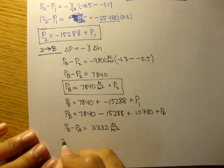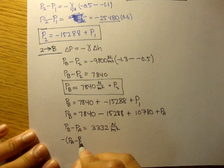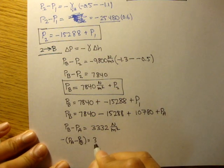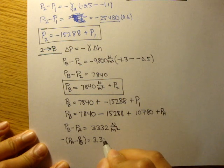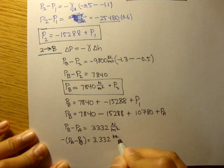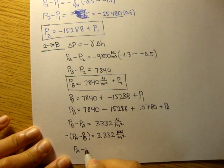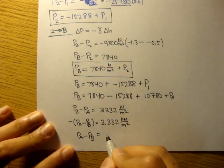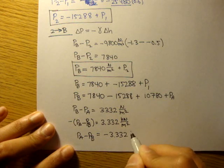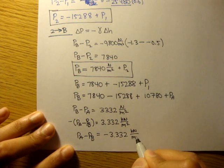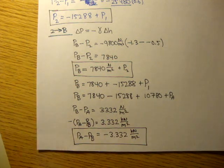So what we can do here is factor out a negative to make it P_A minus P_B is equal to... Let's change this to kilonewtons per meter squared, 3.332 kilonewtons per meter squared. So P_A minus P_B is equal to negative 3.332 kilonewtons per meter squared. And that's our final answer.